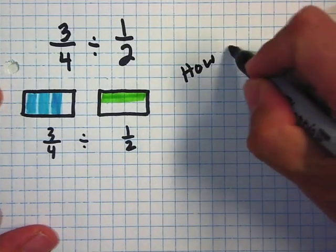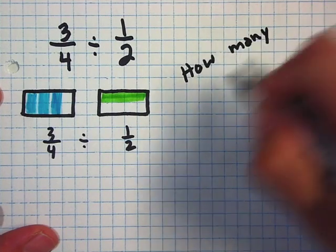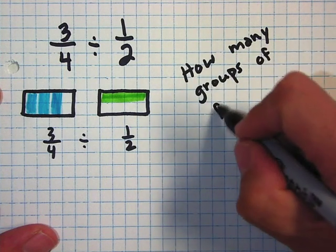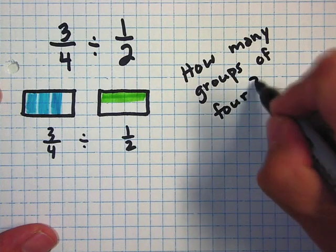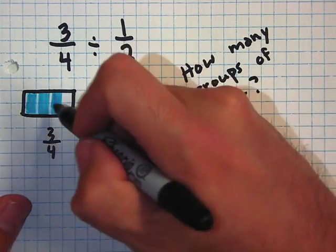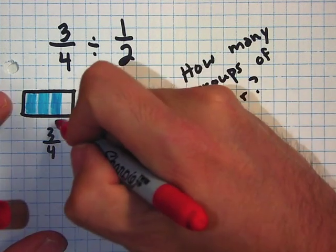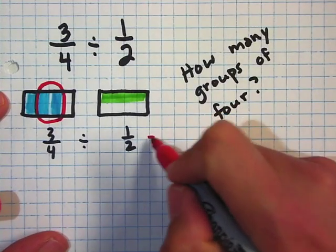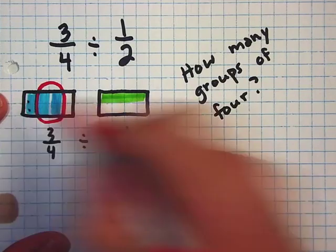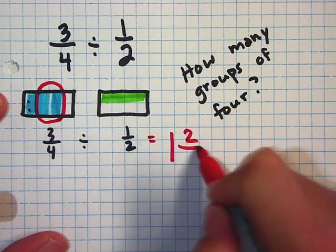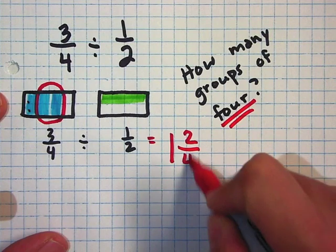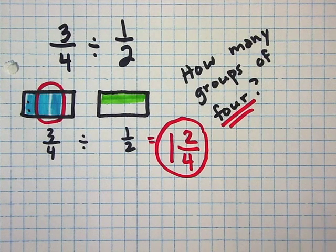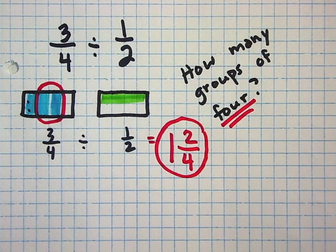So once again the question you're going to ask yourself, and it's always a good idea to write this down, is how many groups of four are there in three-fourths? So you circle the groups. There I have one. So that's my whole number one with two left over. And my denominator is four because that was my initial question. How many groups of four are there? So my answer is one and two-fourths. Simplest form, that would be one and one-half.